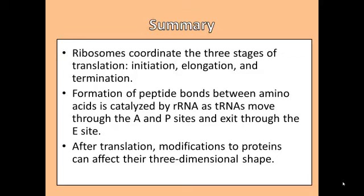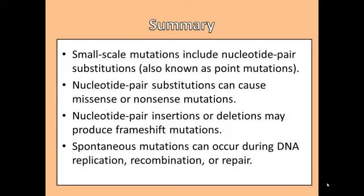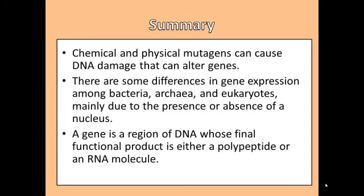After translation, modifications to proteins can affect their three-dimensional shape. Small-scale mutations include nucleotide pair substitutions, also known as point mutations. Nucleotide pair substitutions can cause missense or nonsense mutations. Nucleotide pair insertions or deletions may produce frameshift mutations. Spontaneous mutations can occur during DNA replication, recombination, or repair. Chemical and physical mutagens can cause DNA damage that can alter genes.